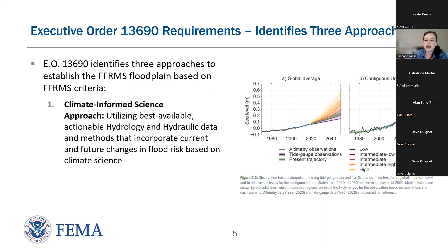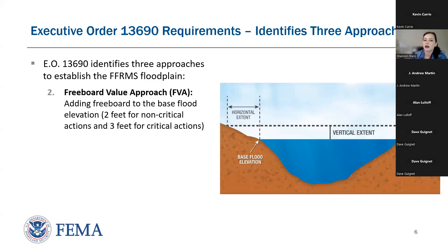Federal agencies must determine which of the following approaches they will use to establish the FFRMS floodplain. There are three ways to establish it. The first is the Climate-Informed Science Approach, or CISA, which utilizes best available information and actionable hydrologic and hydraulic data incorporated for current and future changes in flood risk based on climate science. The graph on the right depicts relative sea level rise under different scenarios ranging from low to high, pulled from the most recent state-of-the-science report.